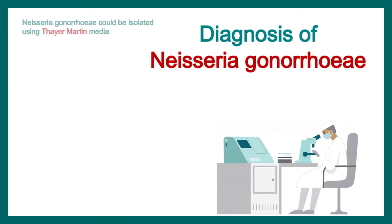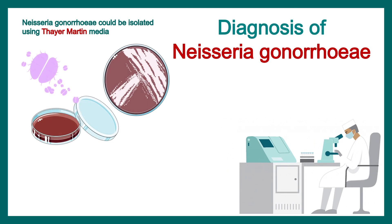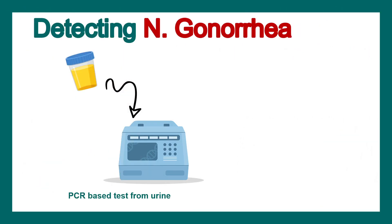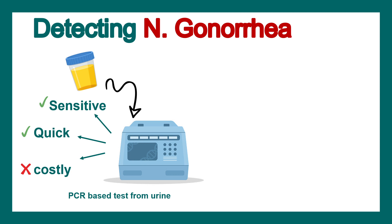For diagnosis of N. gonorrhea: it can be isolated using Thayer-Martin media, which is a modified chocolate agar media containing an antibiotic cocktail of vancomycin, nystatin, and colistin. More accurate diagnosis can be made via PCR-based tests from urine. PCR is more sensitive and quick, though it is costly and cannot be used in every health setup.